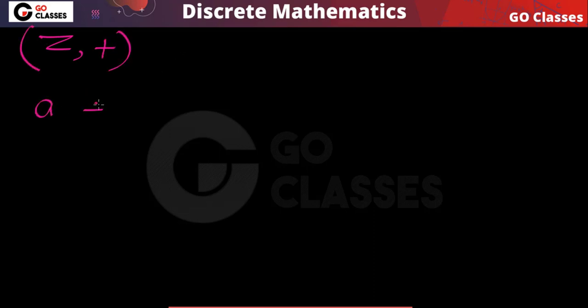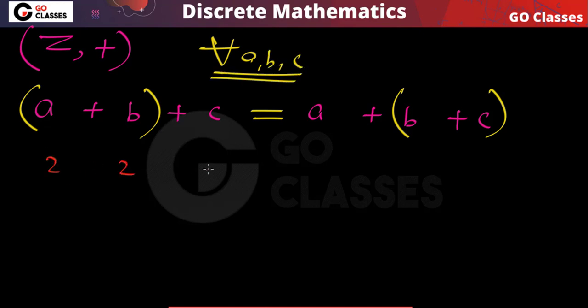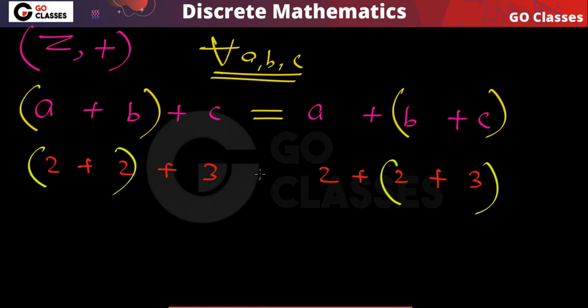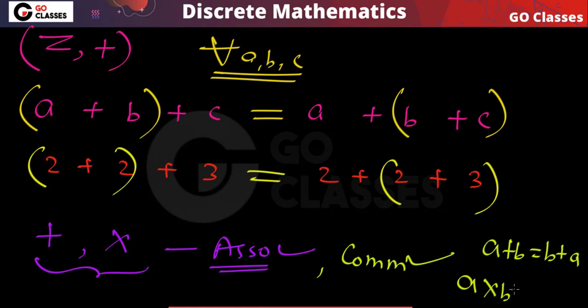For example, you can notice that the addition operation on integers is associative, because for any three elements you take — same or different — both expressions are equal. For instance, taking 2, 2, 3 you can clearly see these two expressions are the same. Addition and multiplication are both associative and commutative. They are commutative because a plus b equals b plus a, and a multiplied by b equals b multiplied by a.